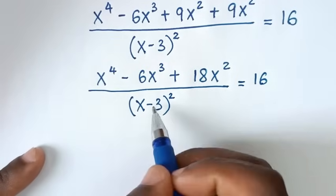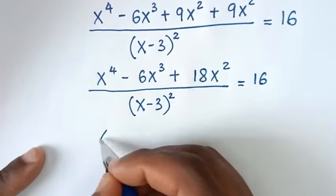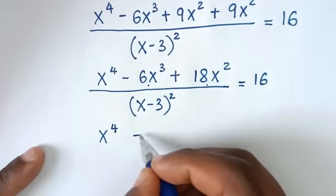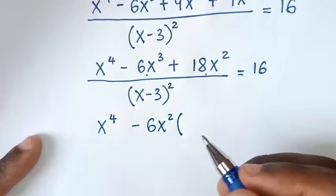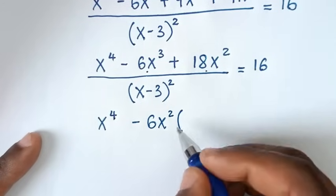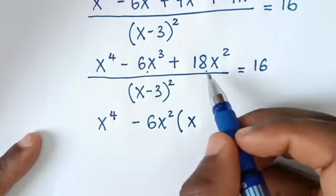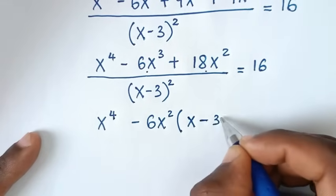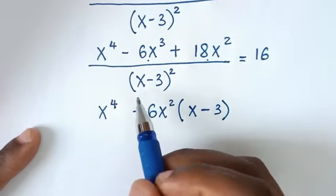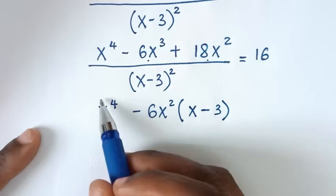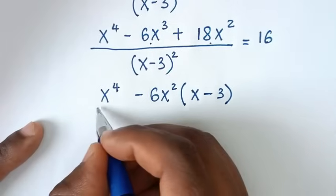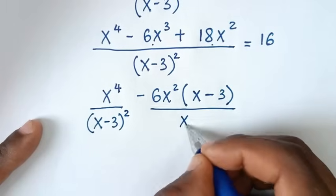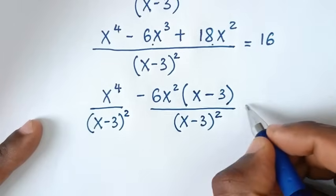In the next step, we'll factor. First x to the power of 4, and from the remaining terms negative 6x square is common, so we take negative 6x square out of the bracket. Negative 6x to the power of 3 divided by negative 6x square is x; positive 18x square divided by negative 6x square is negative 3. Then we divide by x minus 3 bracket square, giving x to the power of 4 over x minus 3 bracket square, minus 6x square over x minus 3 bracket square, equal to 16.